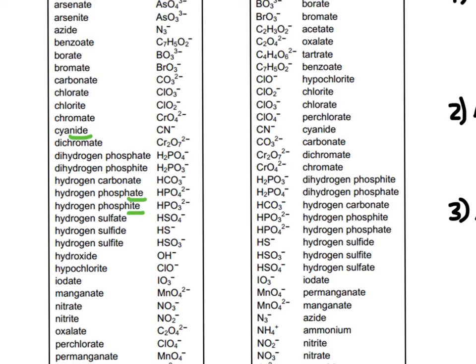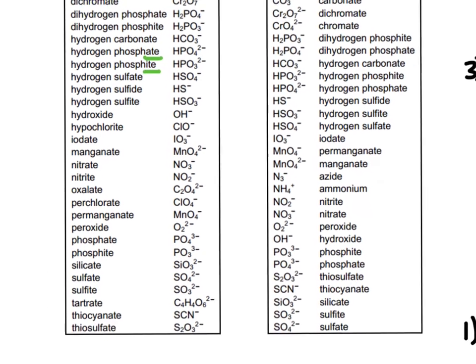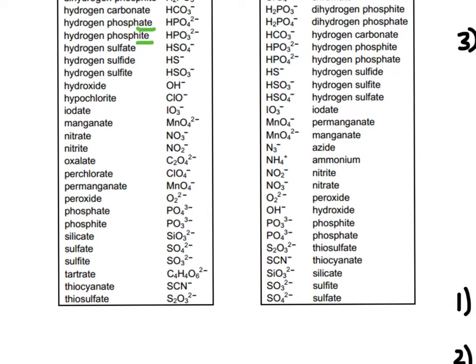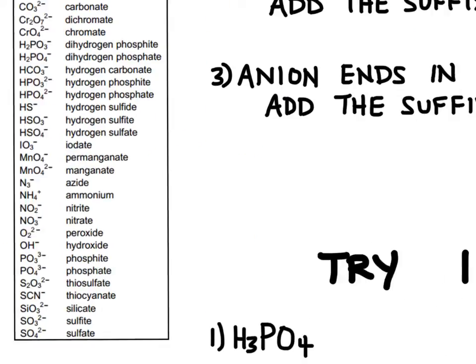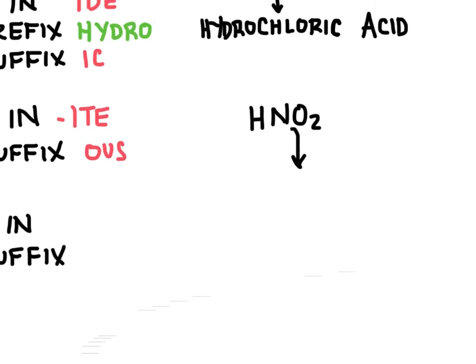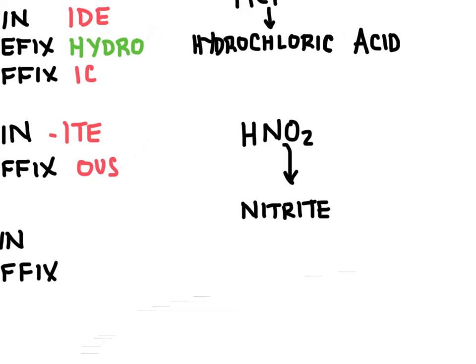Maybe you've memorized these polyatomic ions, or maybe you have to look at the list, which I have to do sometimes. Here's nitrite right here. It's NO2. And so this is called nitrite. We're going to just change the ending from ite to ous, and this becomes nitrous. We'll just add the word acid.